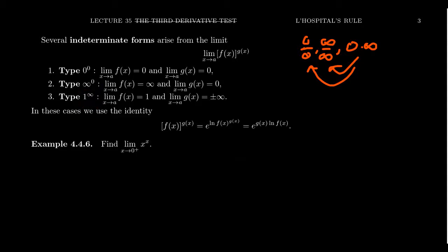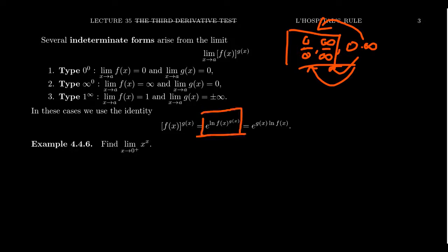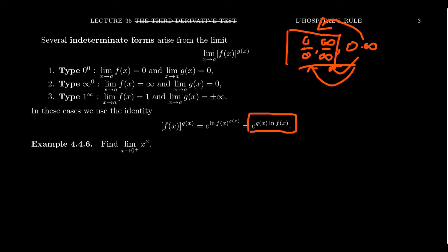L'Hôpital's rule only applies to forms 0 over 0 and infinity over infinity. Just like the 0 times infinity case, we have to transform exponential forms into one of these quotient forms. The general strategy is: if you have an exponential expression f(x) to the g(x), take e to the natural log of that expression. Since the exponential and natural log are inverse operations, they cancel, giving back f to the g. The advantage is that by logarithmic properties, the exponent comes out in front, giving e to the g times the natural log of f.